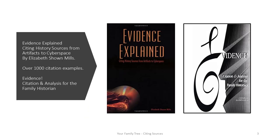Evidence Explained is the definitive guide to the citation and analysis of historical sources, with over 1,000 citation examples. It guides you through a maze of sources not covered by other citation manuals. Every devoted genealogist is concerned with citations in their analysis. For genealogy, accurate citations are necessary so that the evidence can be judged and, if necessary, allow for the research to be repeated.